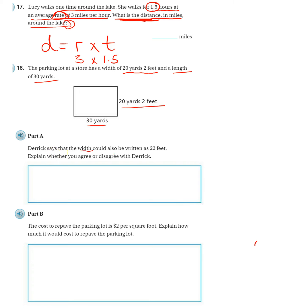Derek says the width could also be written as 22 feet. Explain whether you agree or disagree with Derek. Well, I know to change yards to feet, I have to multiply it by 3. And that's going to be 60 plus the additional 2 feet. So, I disagree with Derek. Why? Because 20 yards 2 feet is equal to 62 feet, not 22 feet.